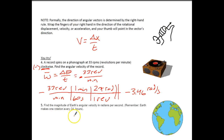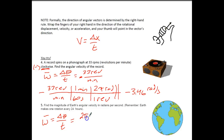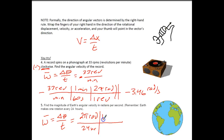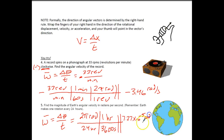The next problem asks for the magnitude of Earth's angular velocity in radians per second. The Earth rotates once every 24 hours, so angular velocity equals 2π radians divided by 24 hours. Converting: 1 hour = 3,600 seconds (since 60 × 60 = 3,600). Doing the math gives us 7.27 × 10⁻⁵ radians per second.